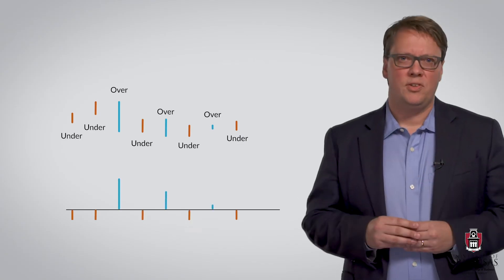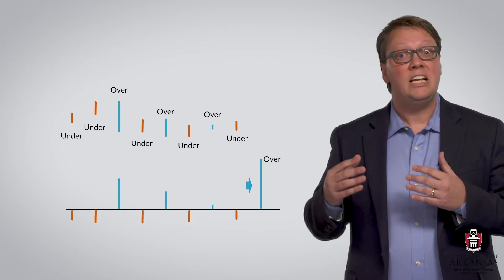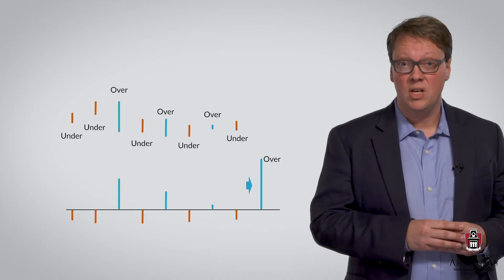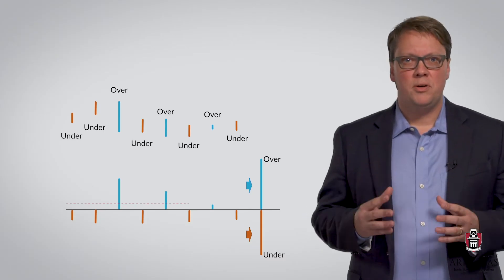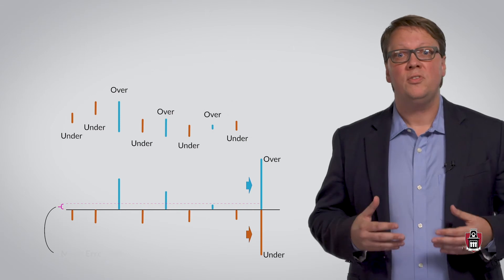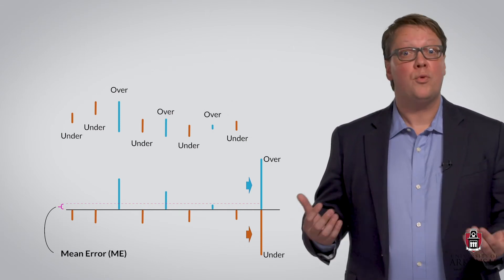In this particular case, the total extent to which we overpredicted is likely greater than the sum of the forecast errors in those instances where we underpredicted demand. This comparison of overpredictions and underpredictions produces the mean error, which is the measure of bias of our forecasts.